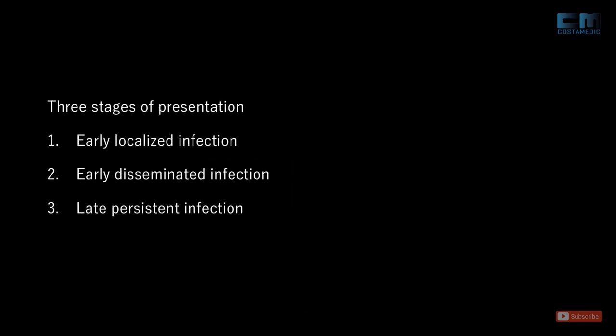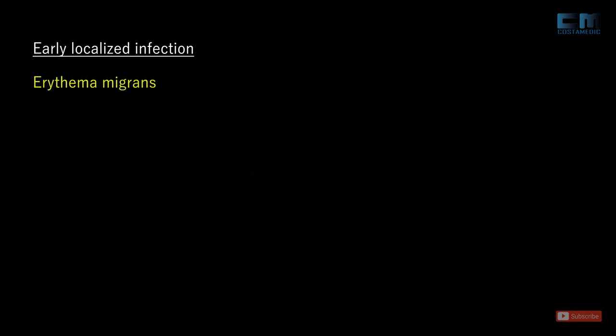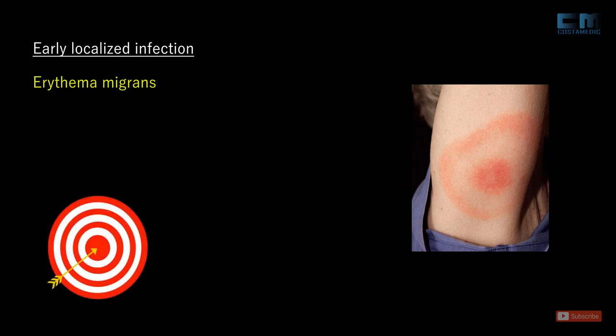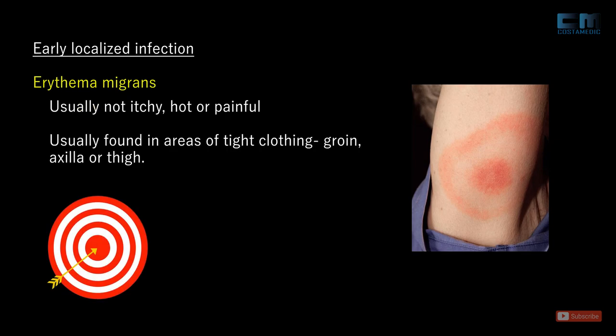Lyme disease presents with a wide range of symptoms. The disease usually progresses in three stages and may be arrested at any stage. The first stage, early localized infection, is characterized by erythema migrans — an erythematous, expanding macular rash, often with central clearing, classically described as a target or bull's eye lesion. The rash is not usually itchy, hot, or painful, and is typically found in areas of tight clothing such as the groin, axilla, or thigh.